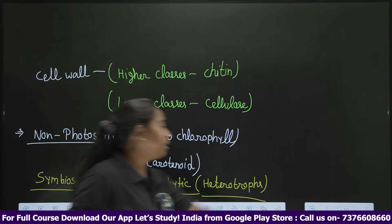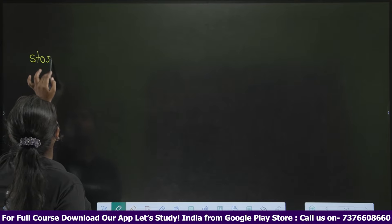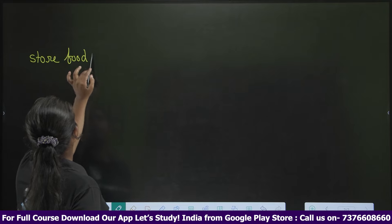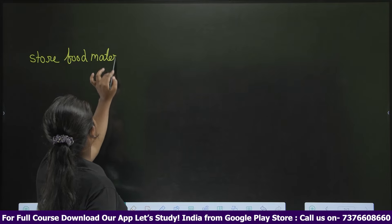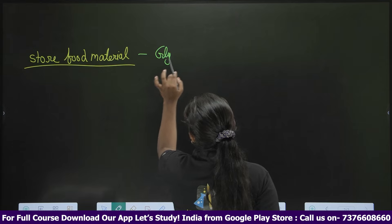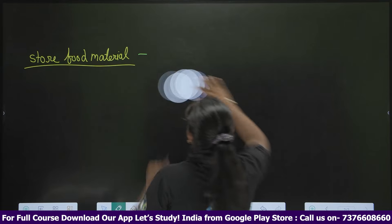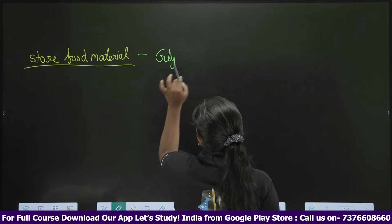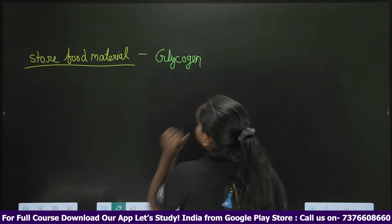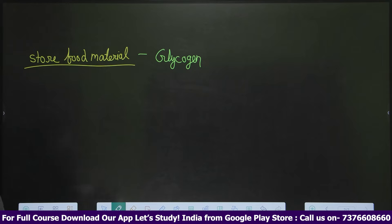If we talk about food storage, the stored food materials in fungi are stored in the form of glycogen, similar to what is used by animals. In humans and animals, food is also stored in the form of glycogen.